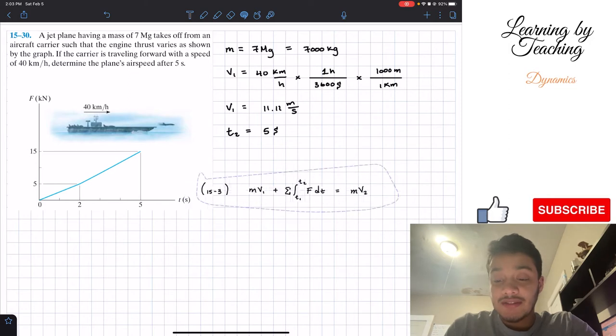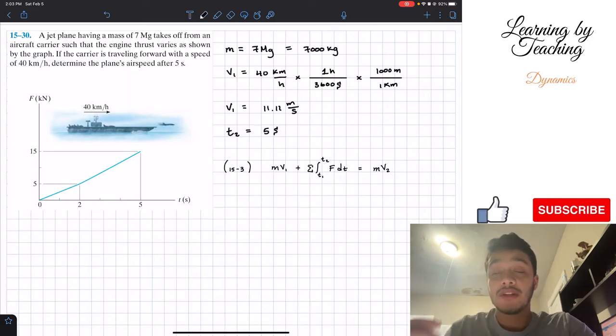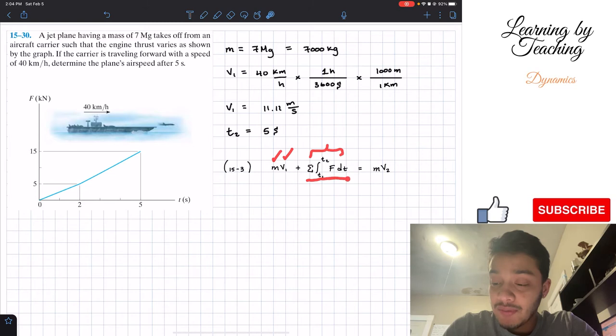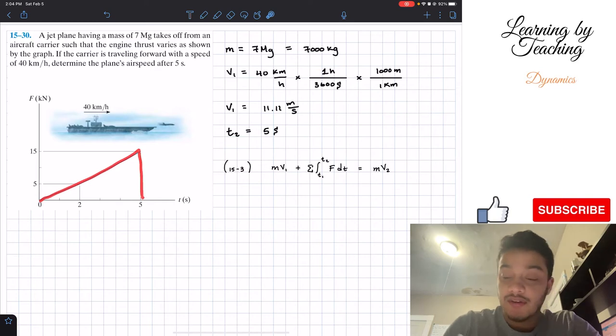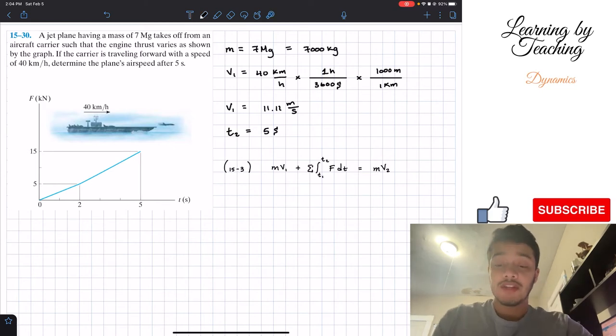We're going to utilize chapter 15, which is the conservation of linear momentum and impulse equation. Since we're going to utilize this in order to find the speed, the velocity, we need to have the mass, which we know, the initial velocity, which we know, and the impulse. The impulse we can find by doing the integral of the force with respect to time, or in other words, the area under this curve. Then we also have the mass. So the first thing that we need to find is the area on the force versus time graph. If we find that, then we have everything to solve for our velocity.